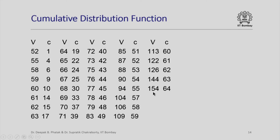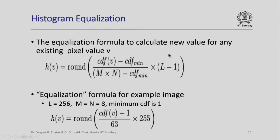Here is the histogram equalization formula. H(V), where V is the value of an existing pixel, is given by the rounded value of: (CDF(V) − CDF_min) divided by (M × N − CDF_min), multiplied by (L − 1). Where does this formula come from? Well, frankly, it does not matter. Those interested in image processing can figure this out. The beauty of computer programming is that if somebody has discovered such a formulation or algorithm, we can implement those formulae into computational processes, which is what we propose to do.